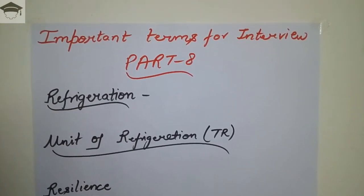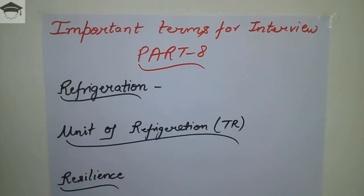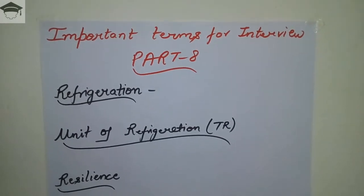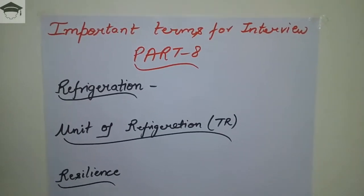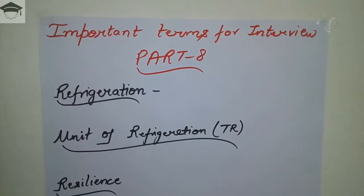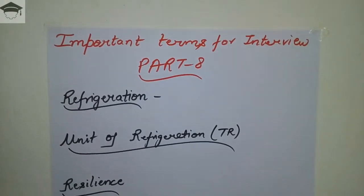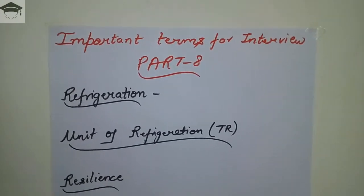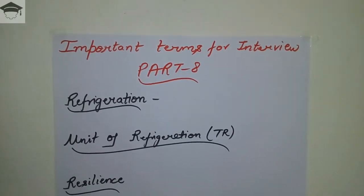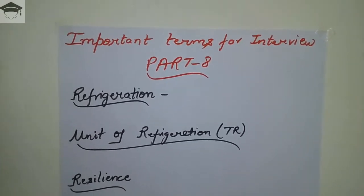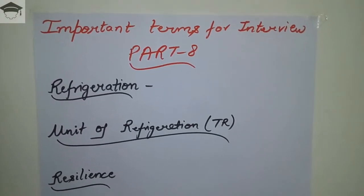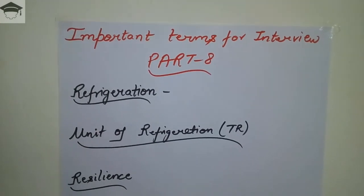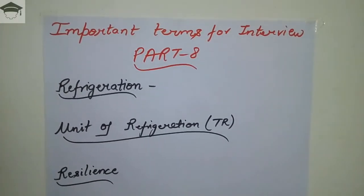The playlist also covers all videos on refrigeration as well as air conditioning. Now, the unit of refrigeration is ton of refrigeration, also known as TR. One ton of refrigeration is equal to 3.51 kilowatts, which is equal to 210 kilojoules per minute. One TR is defined as the amount of heat required to be removed from one US ton of water at 0°C to convert it into one US ton of ice at 0°C in 24 hours.